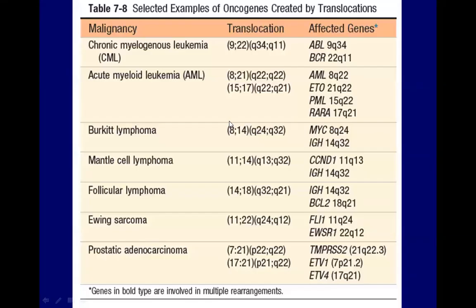These are examples of oncogenes created by translocation. We have CML, where we see formation of the Philadelphia chromosome with the BCR-ABL fusion gene. We also have the PML-RARA fusion gene in acute promyelocytic leukemia. In Ewing sarcoma and in prostatic adenocarcinoma, we also see the formation of fusion genes.